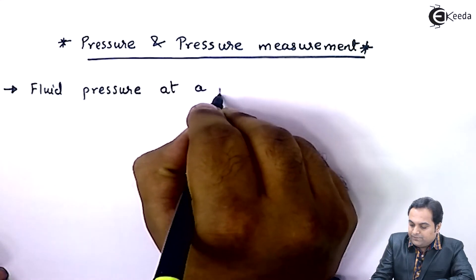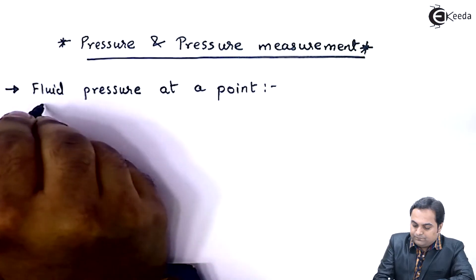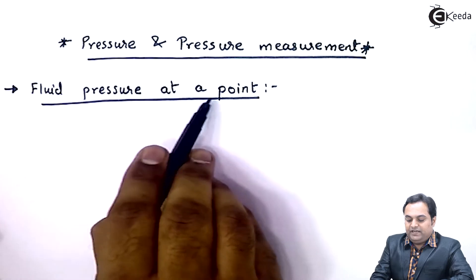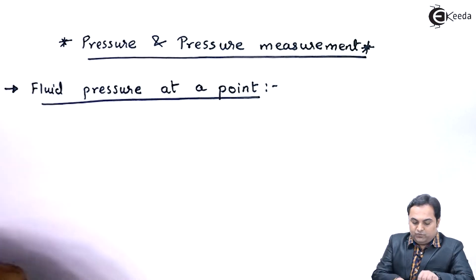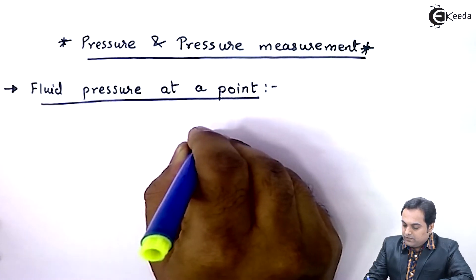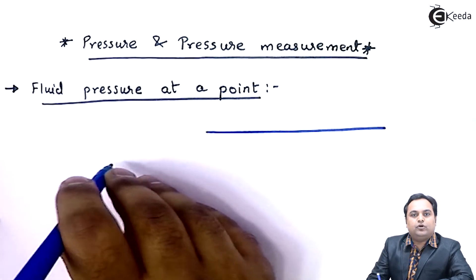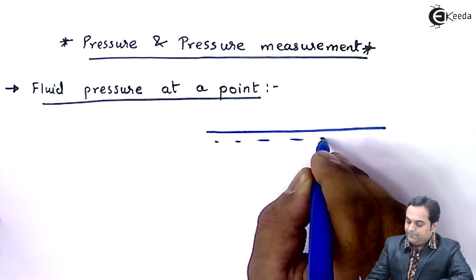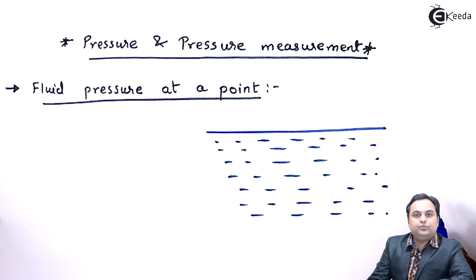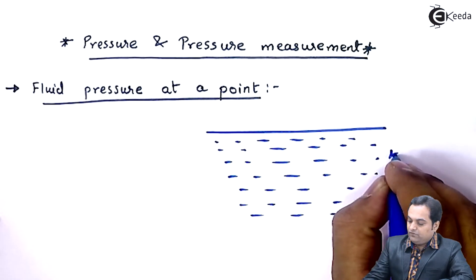So the first heading is fluid pressure at a point. Now what is the meaning of this term fluid pressure at a point? Suppose we have a large mass of fluid. Here I am drawing the diagram. I am assuming that this fluid is water.